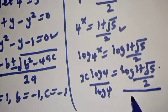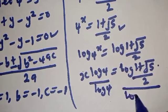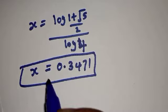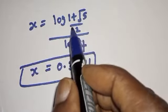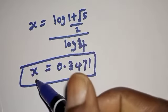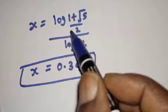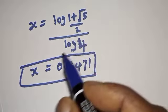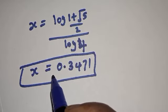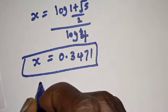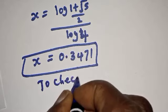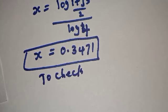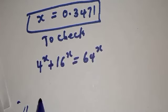Dividing both sides by log 4, we get s is equal to log((1 plus root 5) over 2) divided by log 4. Therefore s is equal to approximately 0.3471. Let's check to confirm if our answer is right.